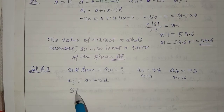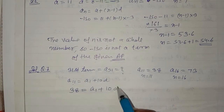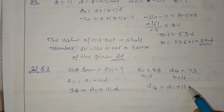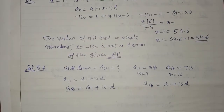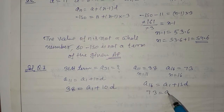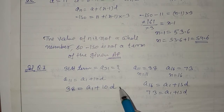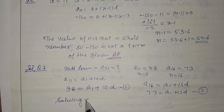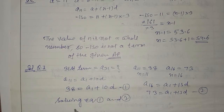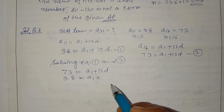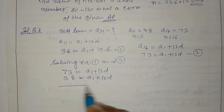a11 کی value دی ہے 38، تو: 38 is equal to a1 plus 10d۔ Similarly, a16 is equal to a1 plus 15d۔ a16 کی value دی گئی ہے 73، تو: 73 is equal to a1 plus 15d۔ اب ان دونوں equations کو solve کریں۔ Equation 1: 38 = a1 plus 10d۔ Equation 2: 73 = a1 plus 15d۔ اب ان کو subtract کر دیجئے۔